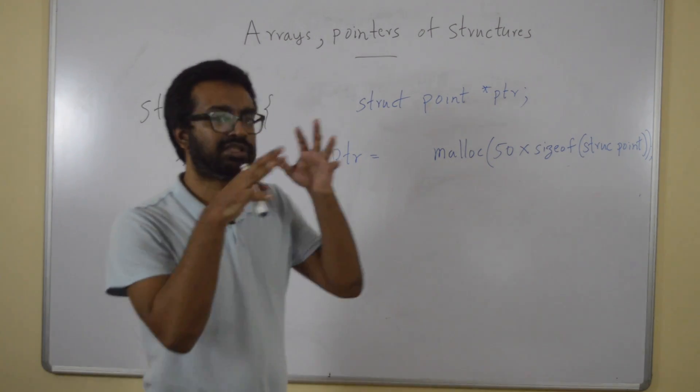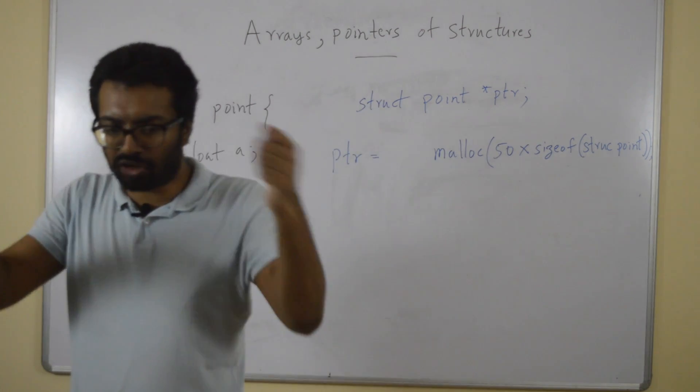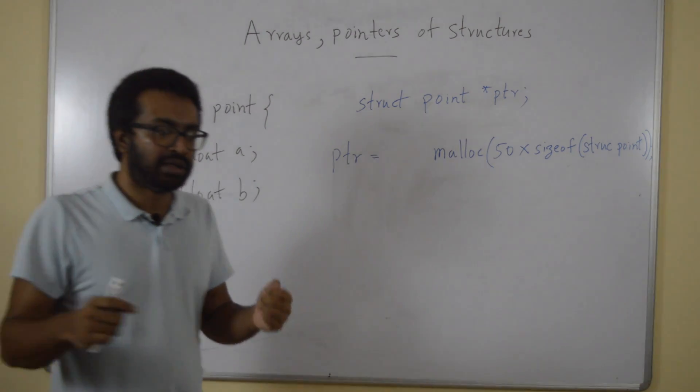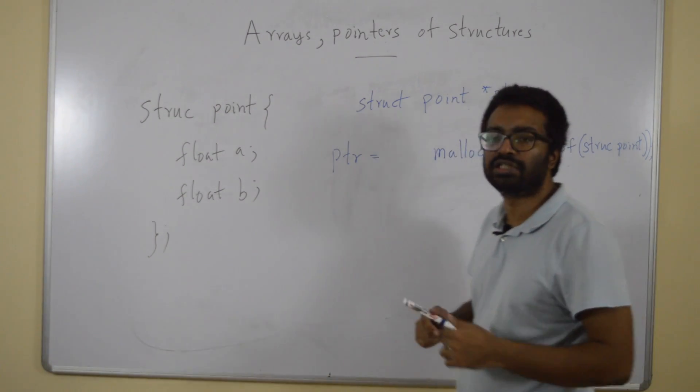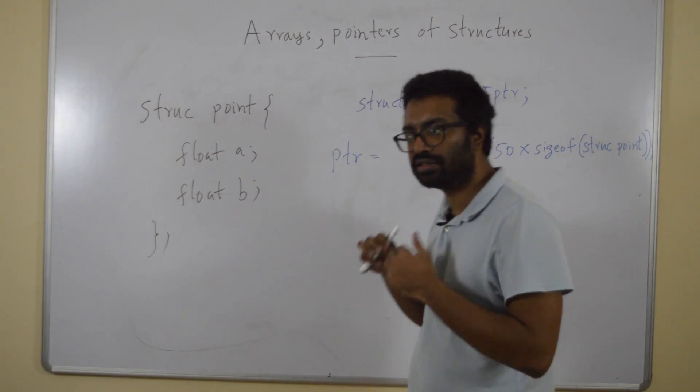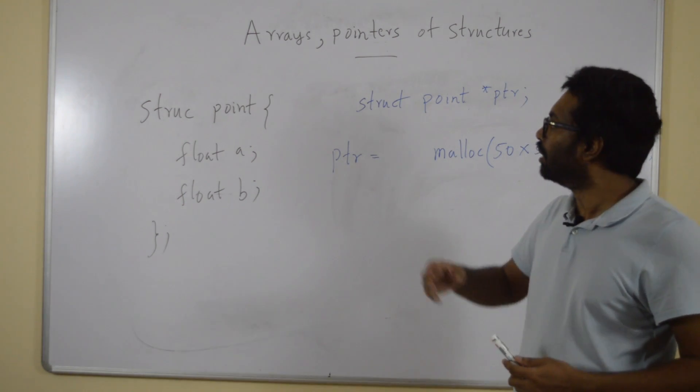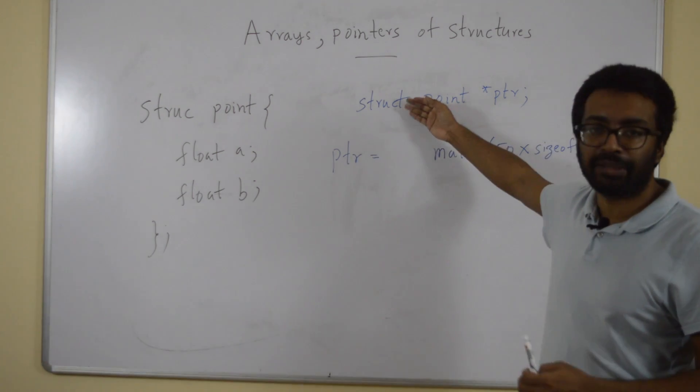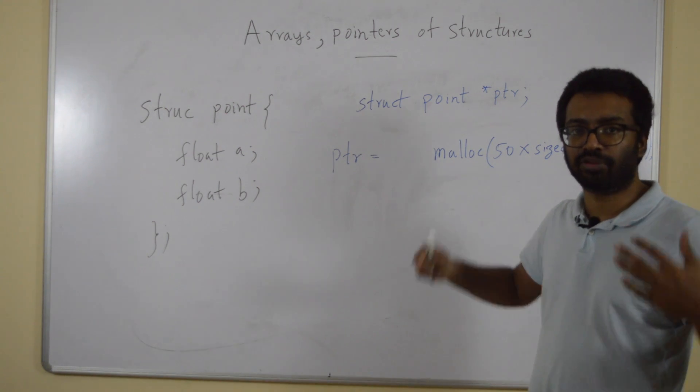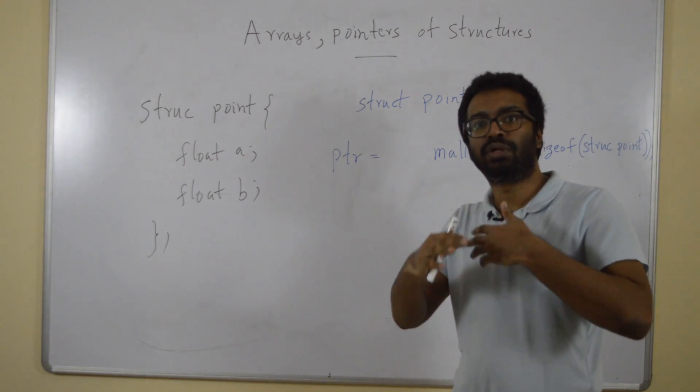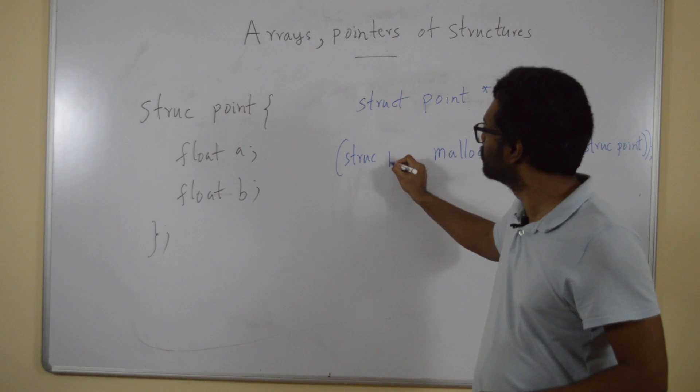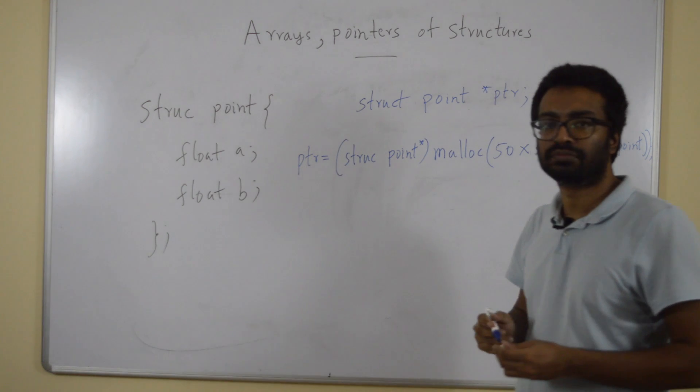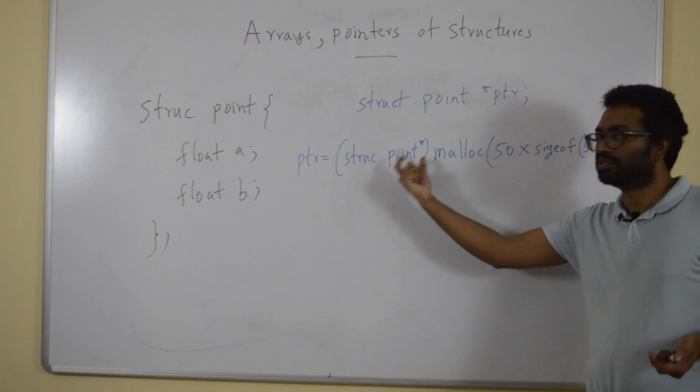Now, the function is going to allocate this much memory and it's going to return a block of memory. It's going to return the address of the first location of that block of memory. And how will it return? It's going to return as a void star pointer. But my ptr is of type struct point star. It's a pointer to a struct point. And therefore, I need to type cast it. How do I type cast it?